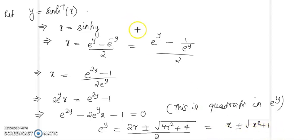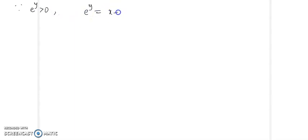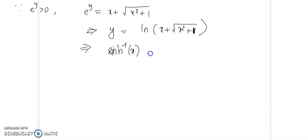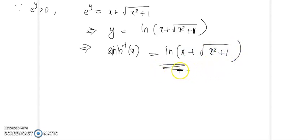Now, e^y = x ± root of x² + 1. We know that e^y is always greater than 0. Since root of x² + 1 is greater than x, taking the negative sign would give a negative result. So, since e^y > 0, we have e^y = x + root of x² + 1. Taking logarithm on both sides gives y = ln(x + root of x² + 1). Since y was sinh⁻¹(x), therefore sinh⁻¹(x) = ln(x + root of x² + 1). This is how we obtain the inverse hyperbolic function.